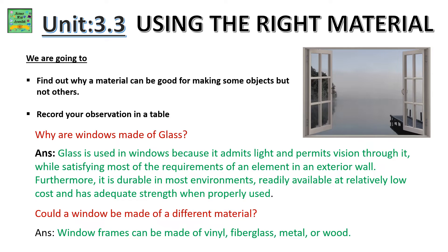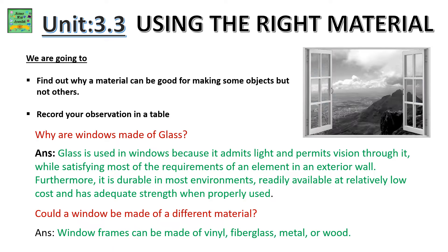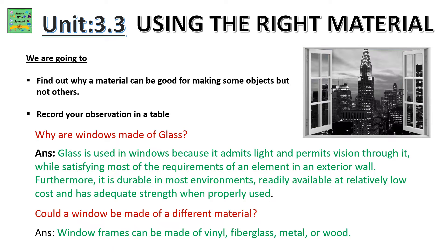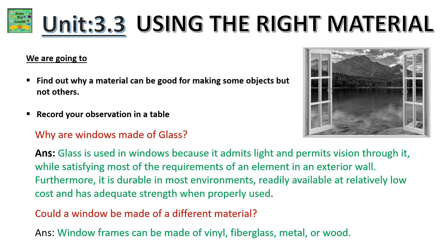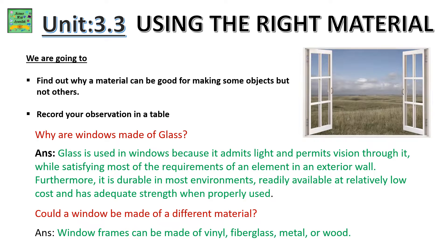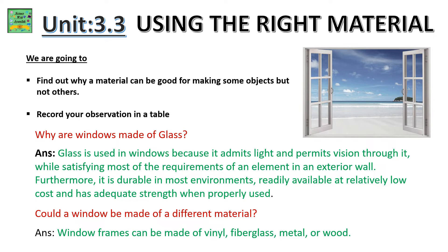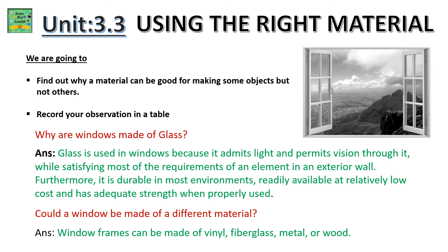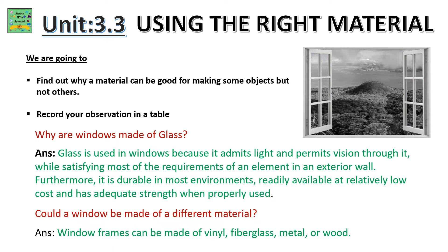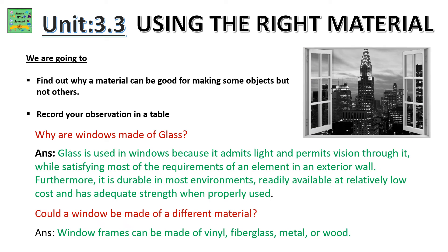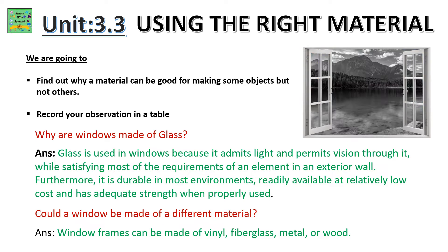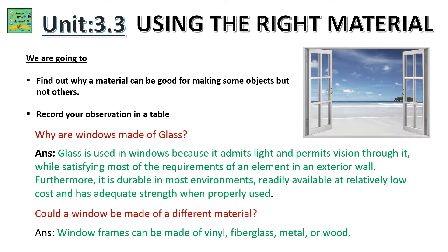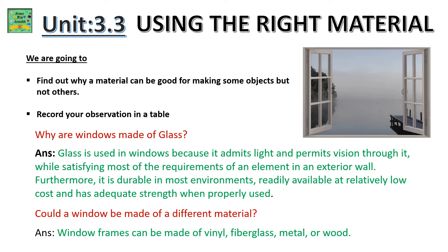Record your observation in a table. Why are windows made of glass? Glass is used in windows because it admits light and permits vision through it, while satisfying most of the requirements of an element in an exterior wall. Furthermore, it is durable in most environments, readily available at relatively low cost, and has adequate strength when properly used.